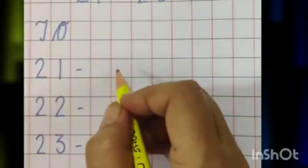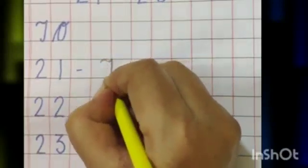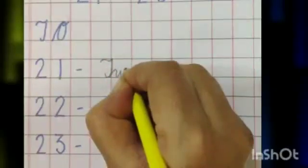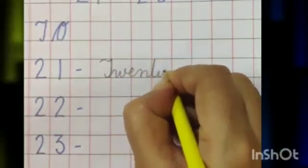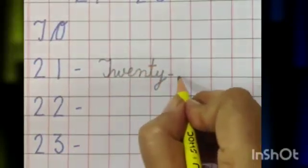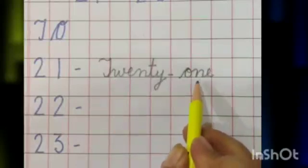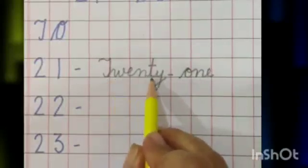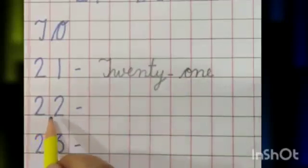Our first number is 21. You know the spelling of 20 and 1, so first we will write 20 then 1. T-W-E-N-T-Y O-N-E. 21: T-W-E-N-T-Y O-N-E.